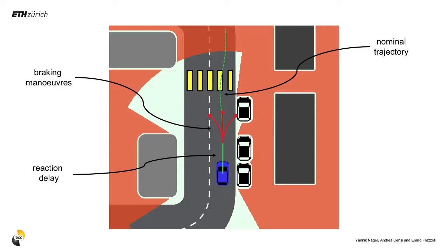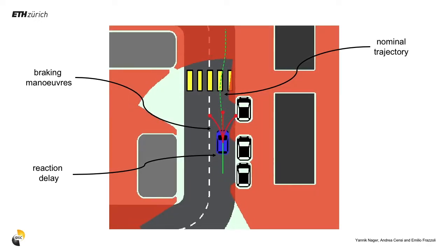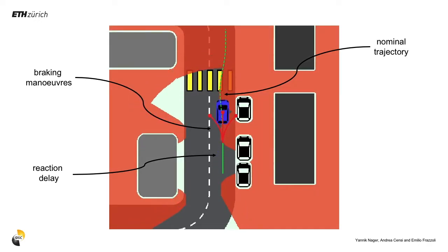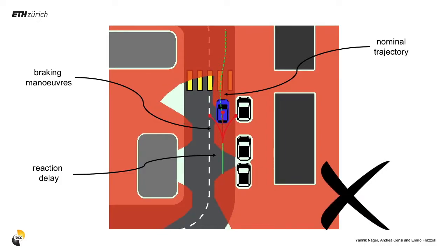In this example, we want to check if the car's current configuration is safe with respect to jaywalking pedestrians. We can see that the vehicle is not capable of braking in time to avoid colliding with a hypothetical agent before the vehicle comes to a stop.